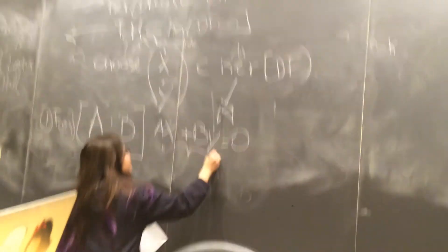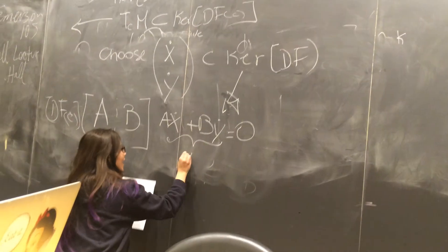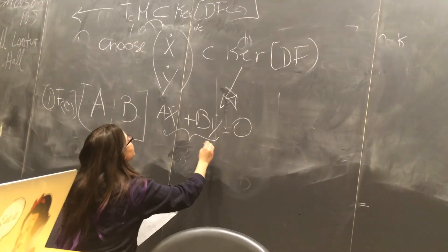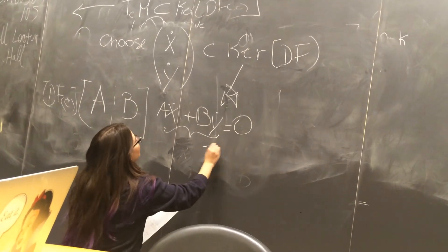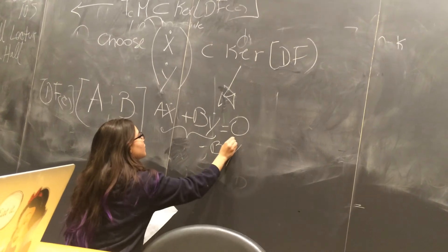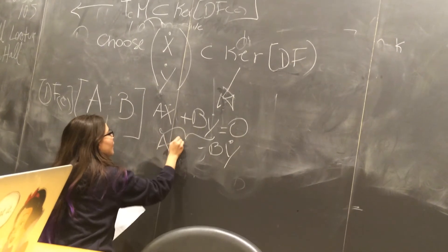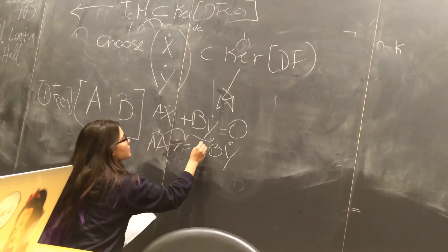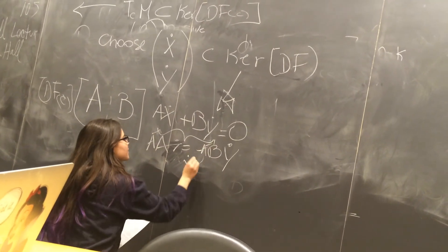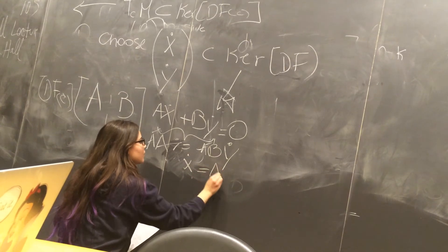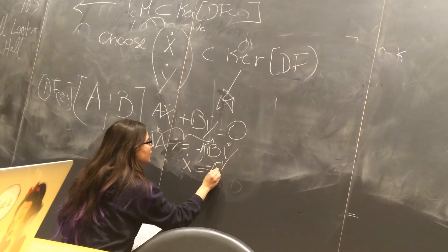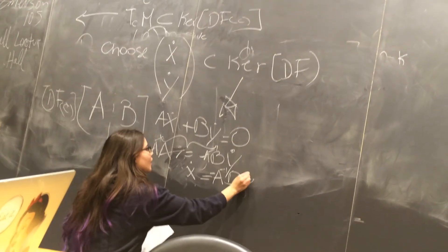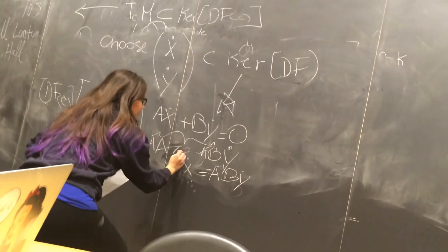This means that AX equals negative BY, and then we apply A inverse to both sides. So we're going to get that X is going to be the negative of the inverse of A, and then B, and Y.